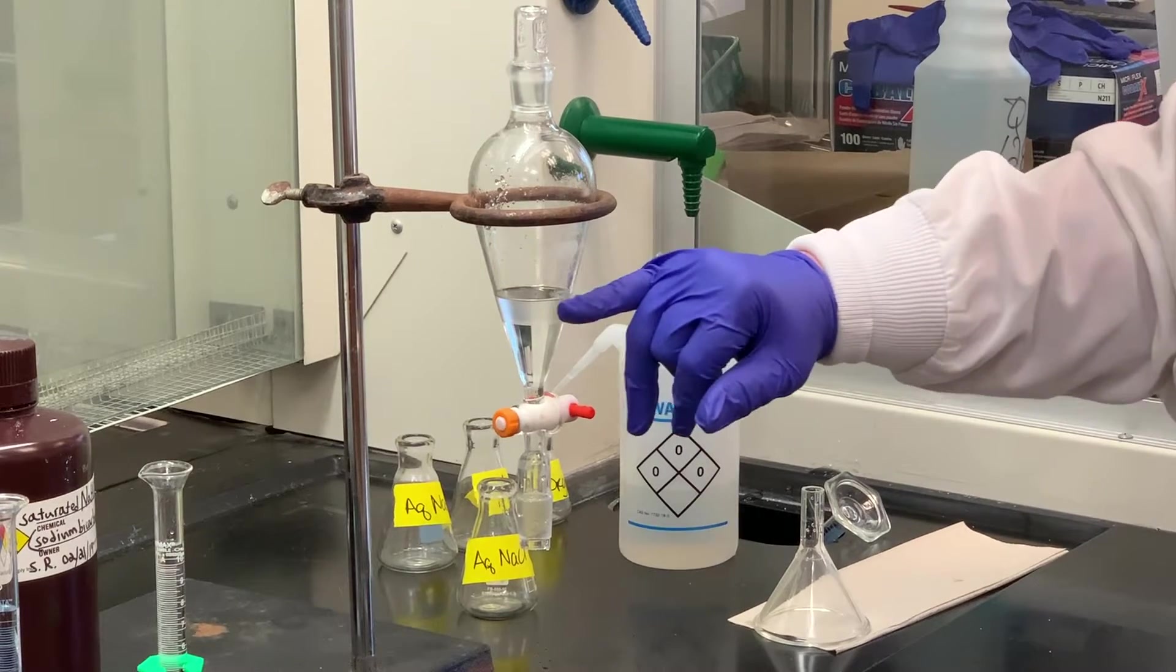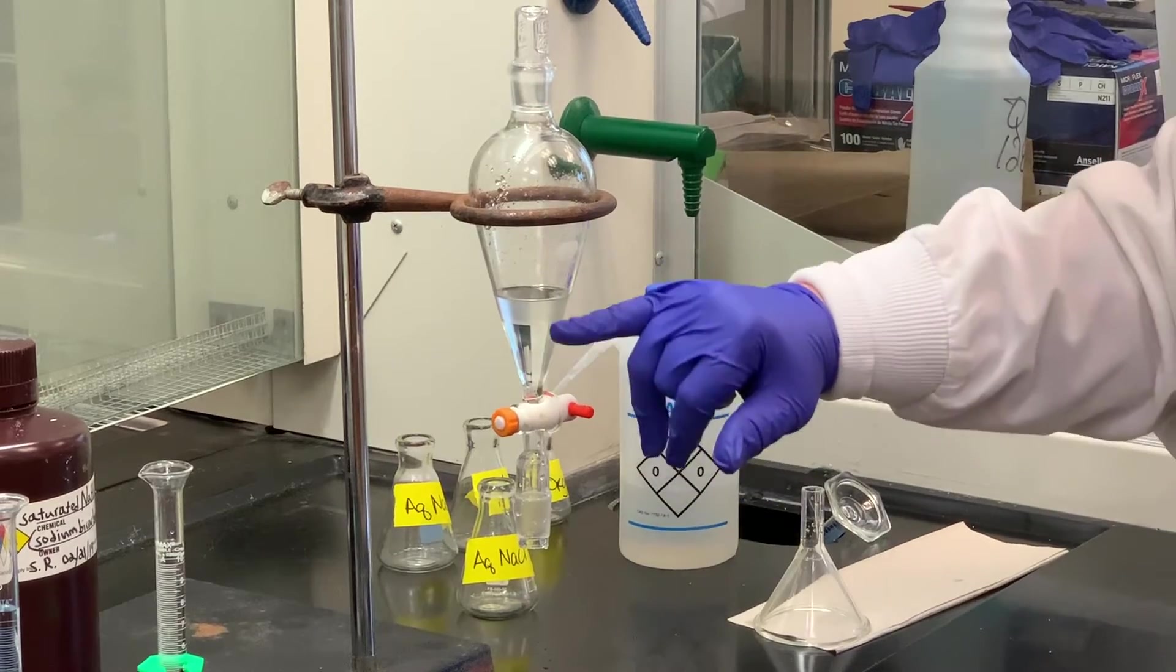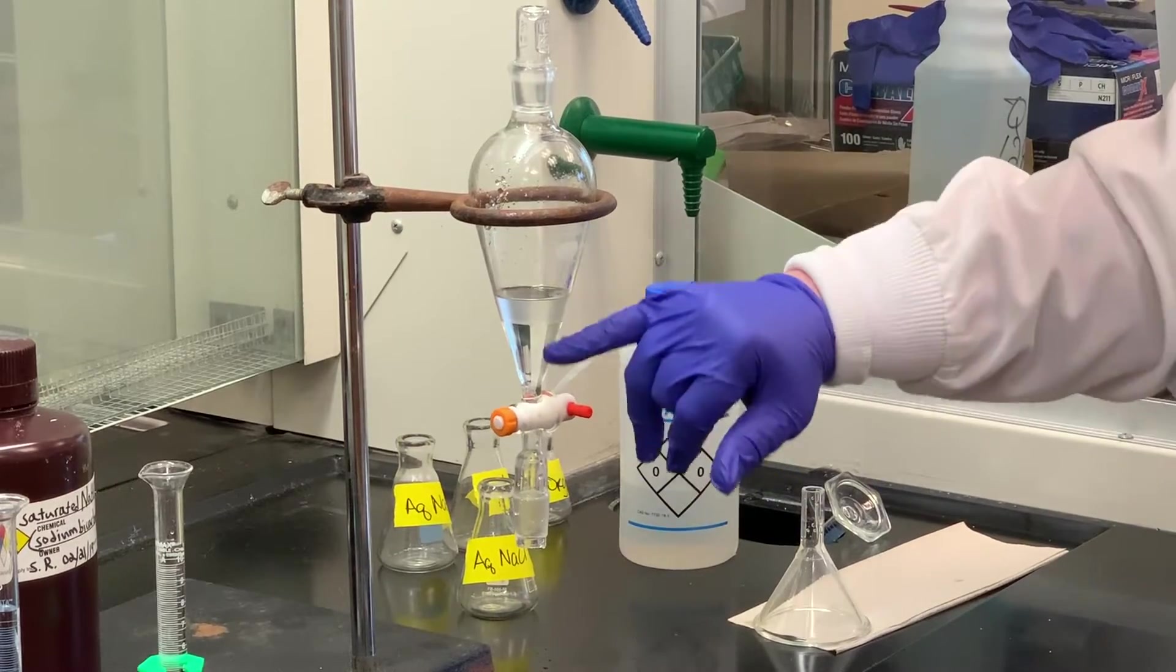And then the next thing we're going to do is drain off that aqueous layer. Again, the organic shouldn't change. If it was on top here, it's going to be on top for the rest of the washings.